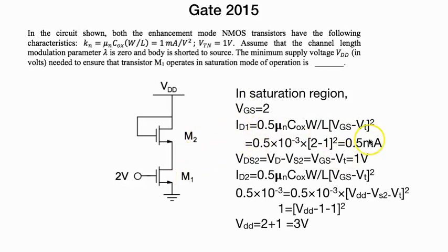We kept ID1 by that. Now VDS1 is VD minus VS, which is equal to VGS minus VT, which is equal to 1. VDS2 - I have taken VD because in saturation region VD is equal to VGS.